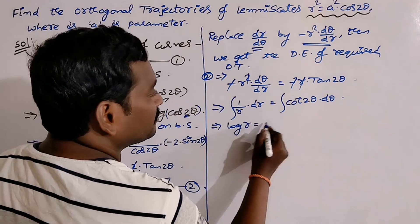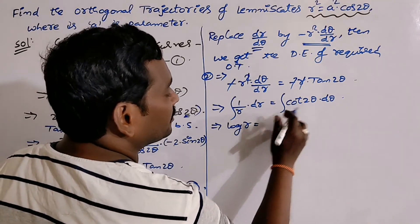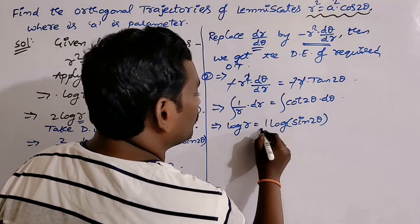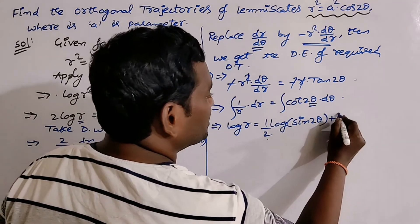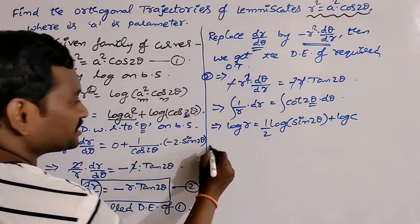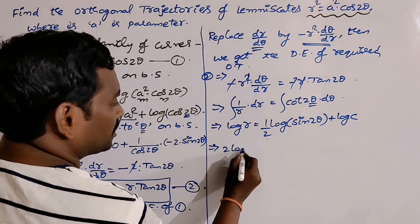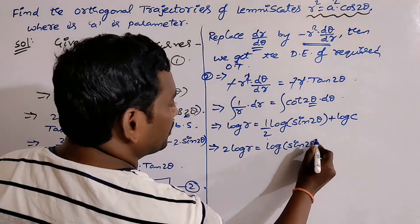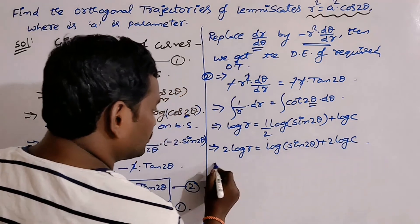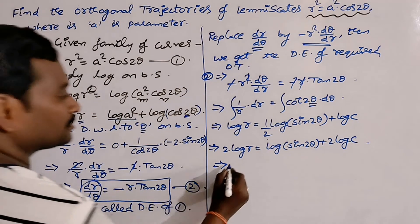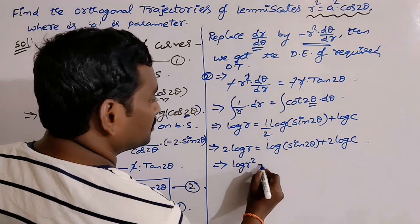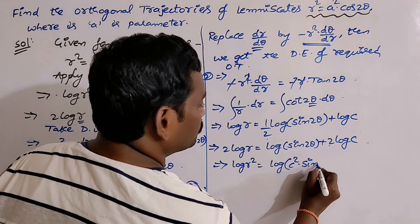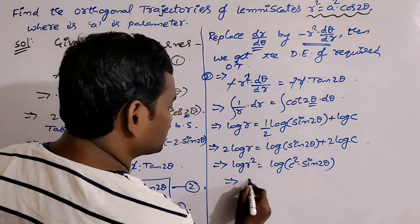Taking integration on both sides: the integral of 1/r is log r, and the formula for ∫cot is log(sin), so we get log r = log(sin2θ)/2 + log c. Multiplying through by 2 gives 2·log r = log(sin2θ) + 2·log c. Using logarithmic properties, log(r²) = log(c²·sin2θ).